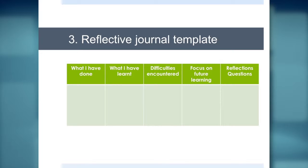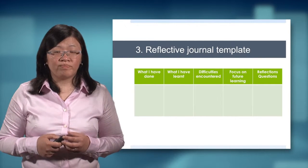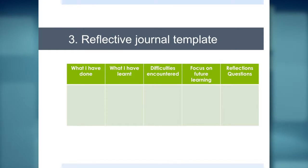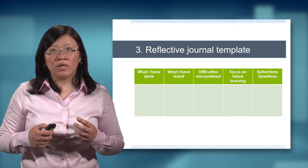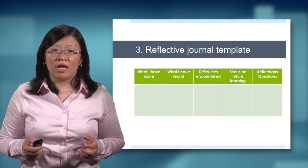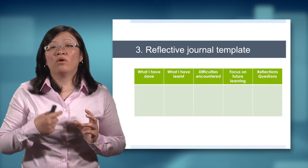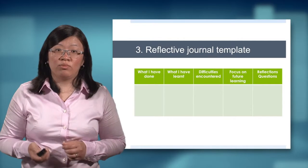Here is a template of what a reflective journal would look like. It is a teaching strategy you would use on a regular basis — you would ask your student to fill out this template perhaps daily, and then monitor and give written feedback on a weekly or twice-a-week basis. In this template we see: what have I done, what have I learned, the difficulties I've encountered, what am I going to focus on in terms of future learning, and what are the questions that come out of that reflection. A common pitfall is that students will tend to do just a description of their day, so you want to move your student from description to genuine reflection — what went well, what did not go well, and how they can improve on that learning.